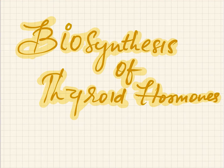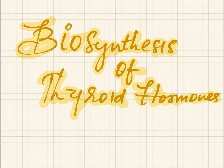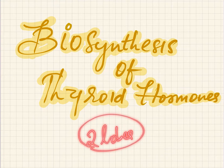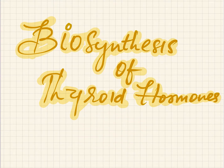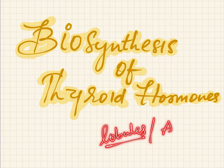Welcome back. Today I'll be talking about the biosynthesis of the thyroid hormones. Before going to the biosynthesis, we should have some knowledge about the anatomy of the thyroid gland. When you see a thyroid gland, you will find two lobes, and these two lobes are connected by means of the isthmus. When you look into the lobes, each lobe contains a large number of lobules, and these lobules are nothing but the acini.